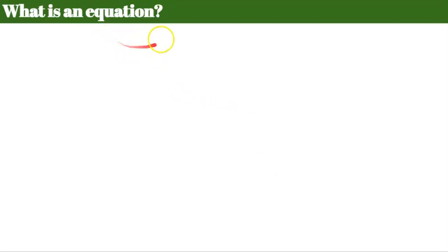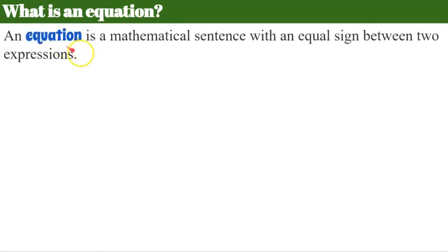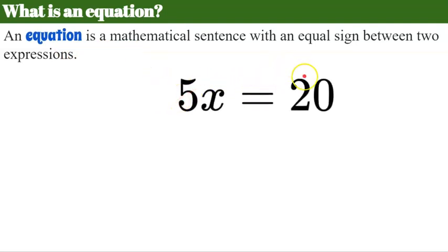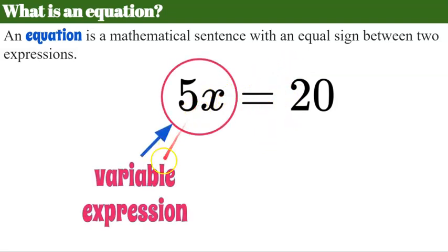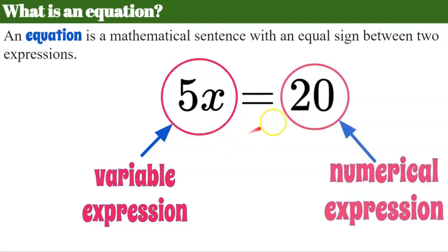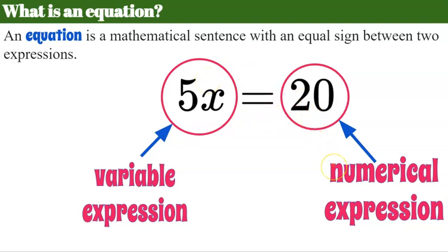Let's review what an equation is. An equation is a mathematical sentence with an equal sign between two expressions. For example, 5x equals 20 is an equation because there is an equal sign taking a variable expression and setting it equal to a numerical expression. The x makes it a variable expression — an unknown amount — but here it has one specific value because it equals 20.